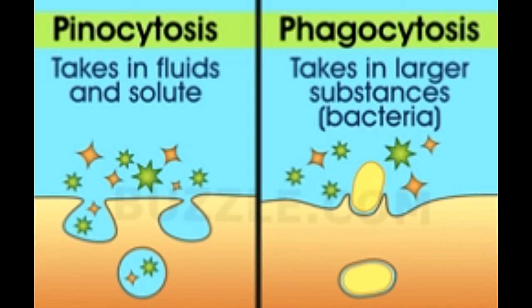Biological pacman: phagocytosis is the process by which a cell engulfs another cell. This process usually takes place when the other cell is stressed, damaged, old, cancerous, infected by a virus, or foreign. Cells take in large polar molecules — proteins, sugars, etc. — through their hydrophobic cell membrane by the process of endocytosis.